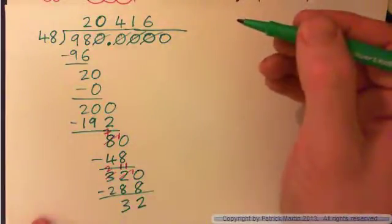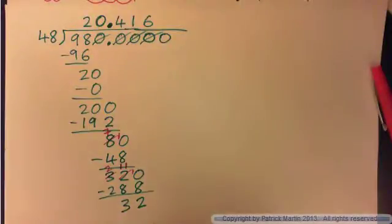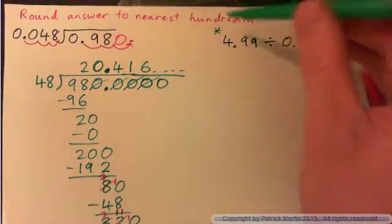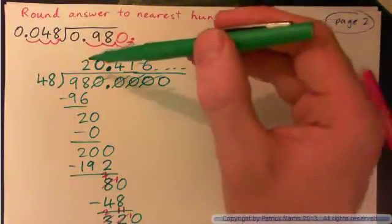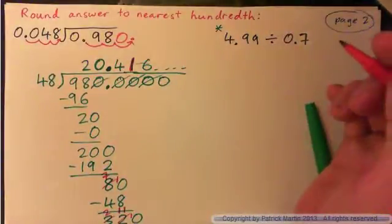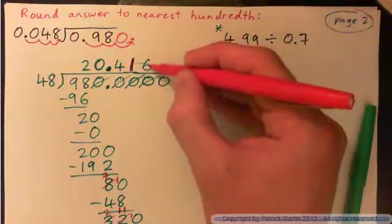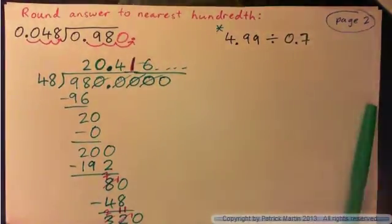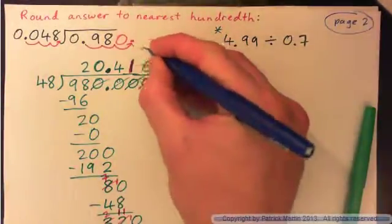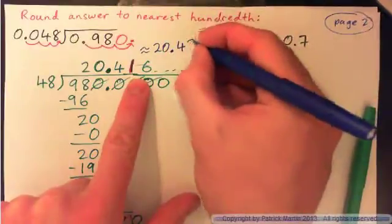Where does the decimal point go in the answer? We should have put it here. So this is just going to keep going on and on. We've got to round the answer to the nearest hundredth. The place values are: tens, units, tenths, hundredths, thousandths. So the hundredths digit is here. We have something to round with. Rounding, our answer is approximately 20.4 — and a 6 comes after, so we round up. So approximately 20.46.